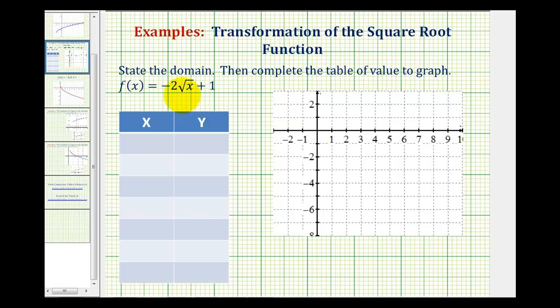We want to state the domain of the function and then complete the table of values to graph the function. We have f(x) equals negative two square root x plus one.